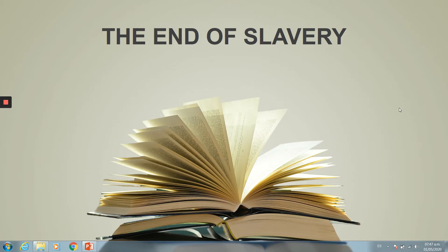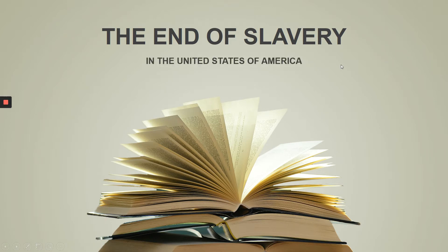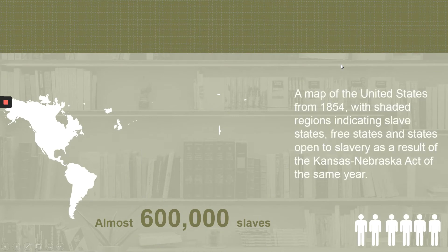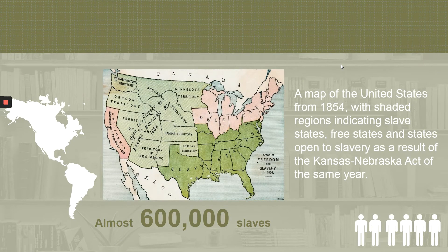Hi everybody. Now we're going to see more about the end of slavery in America, in the United States of America. As you can see here, we have a map of the United States from 1854 with shaded regions indicating slave states, free states, and states open to slavery as a result of the Kansas-Nebraska Act of the same year.